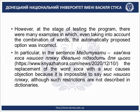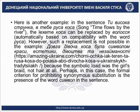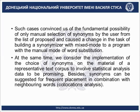Here is another example. In the sentence «ти висока стрункa, в тебе руса коса», the word «коса» can be replaced by «волосся» automatically based on its compatibility with the word «руса». However, such replacement is not possible in the example «Довго дівоча коса була символом краси, естетики, дівоцтва та незайманності», because of the symbolic load of the word «коса» (braid). Perhaps in that case, the formal characterization prohibiting substitution of the word into synonyms is needed. Such cases convince us that a fundamental possibility for manual selection of synonyms by the user from a proposed list is necessary, and caused the change in the task from building a synonymizer with mixed mode to a program with manual mode for word substitution.